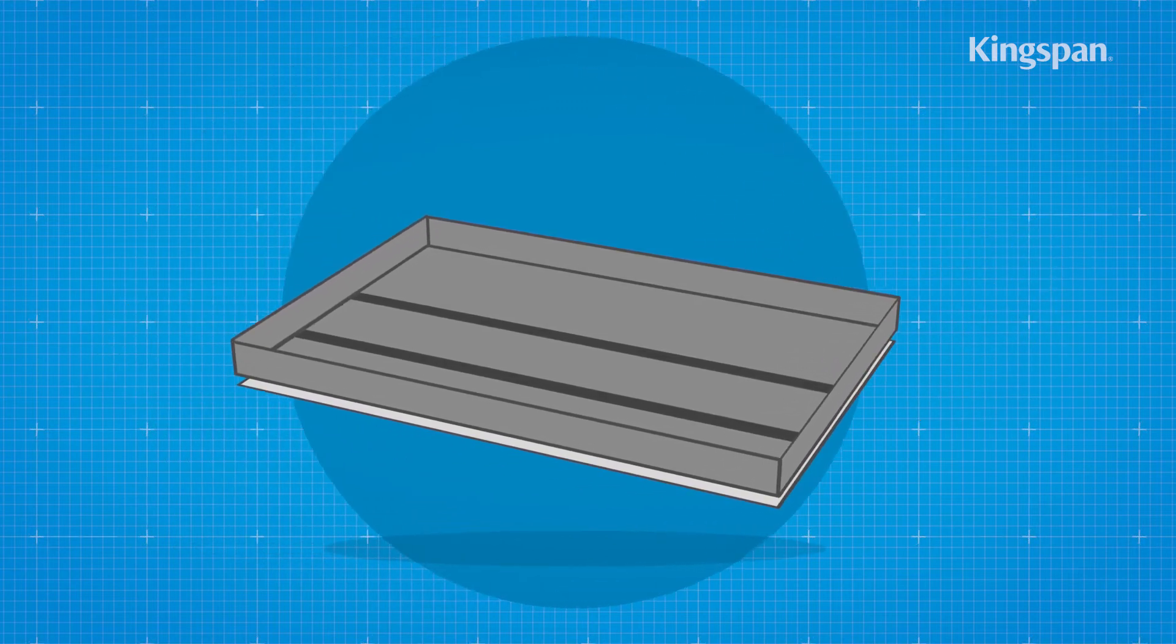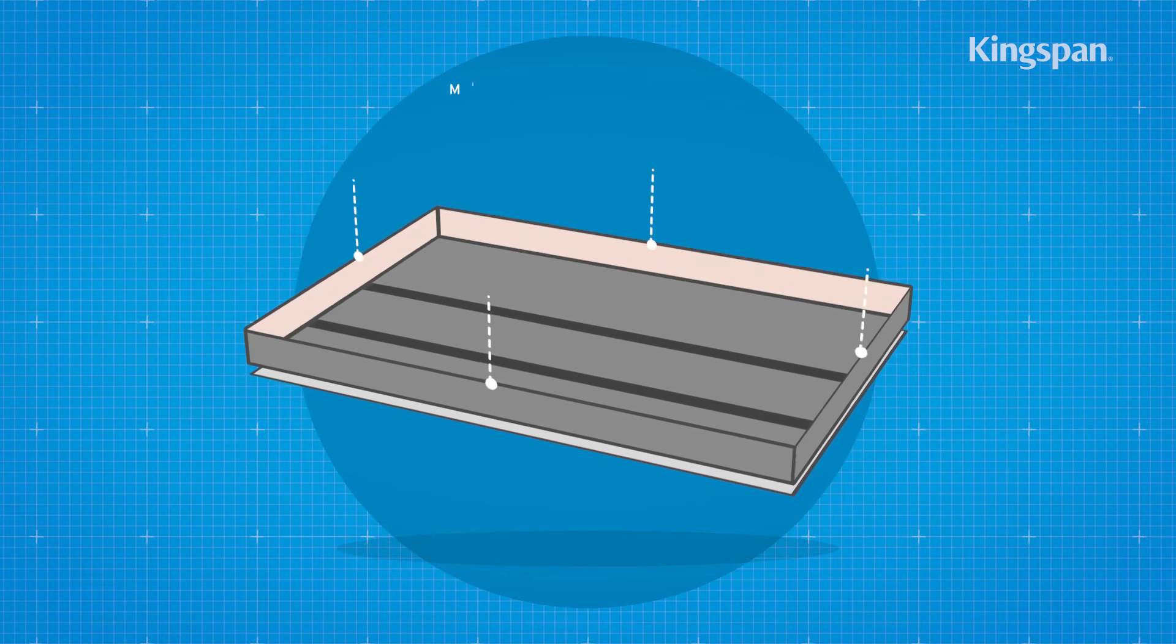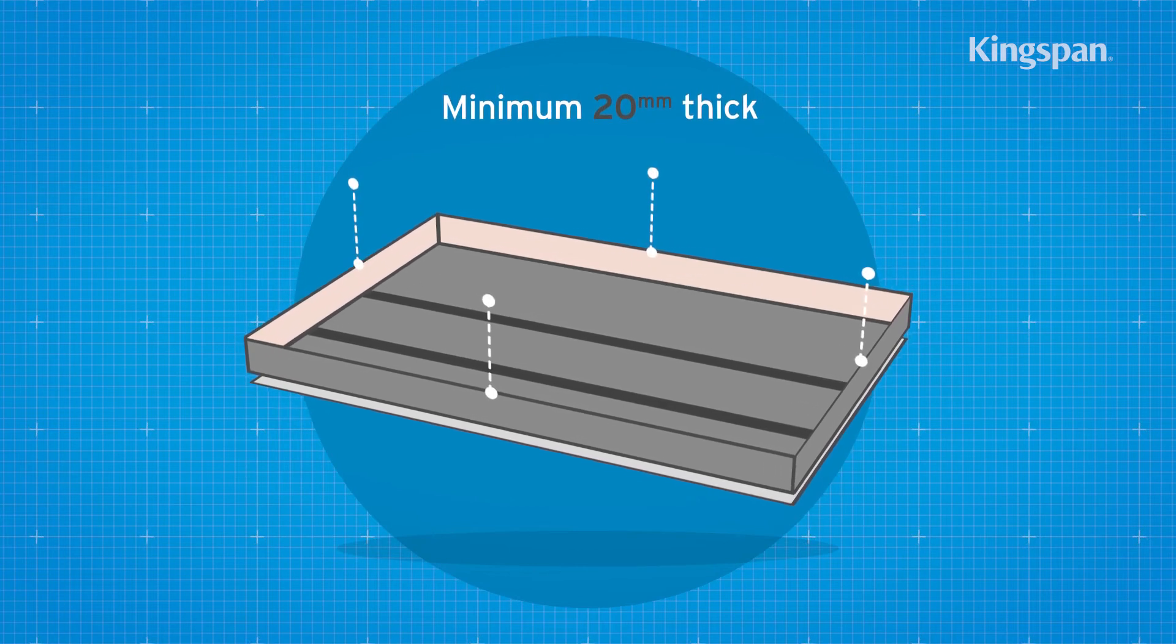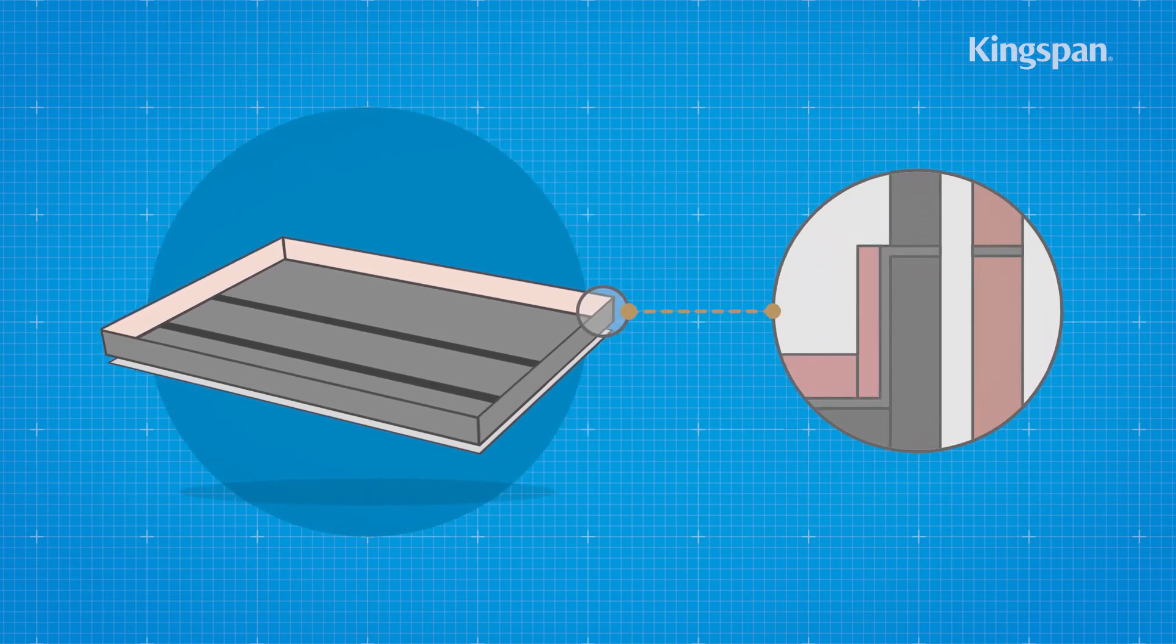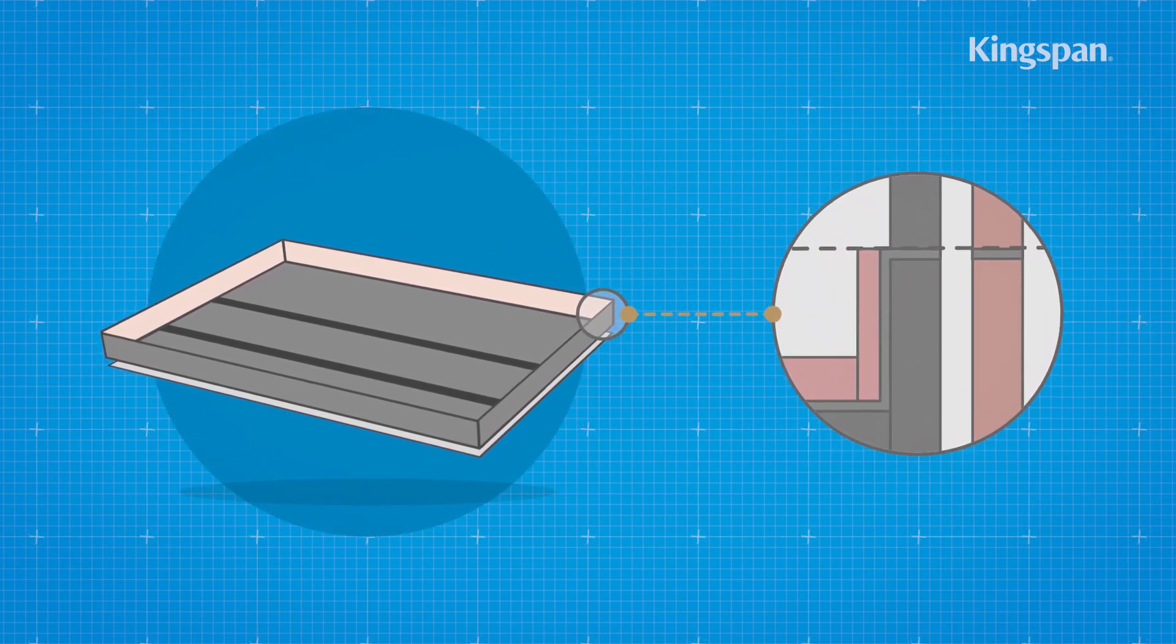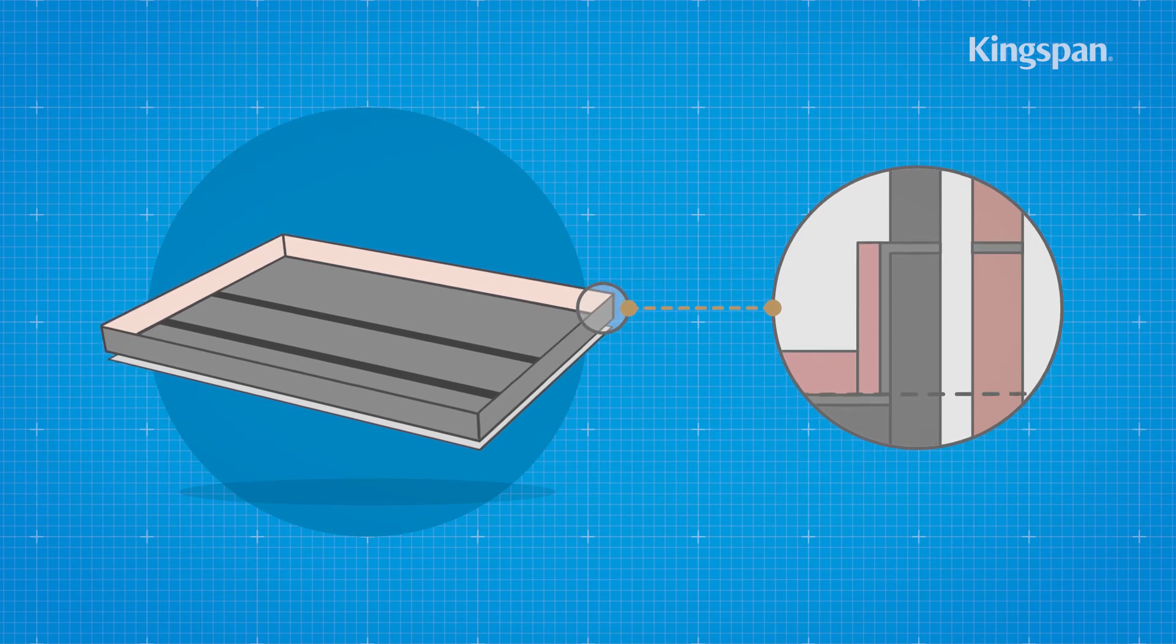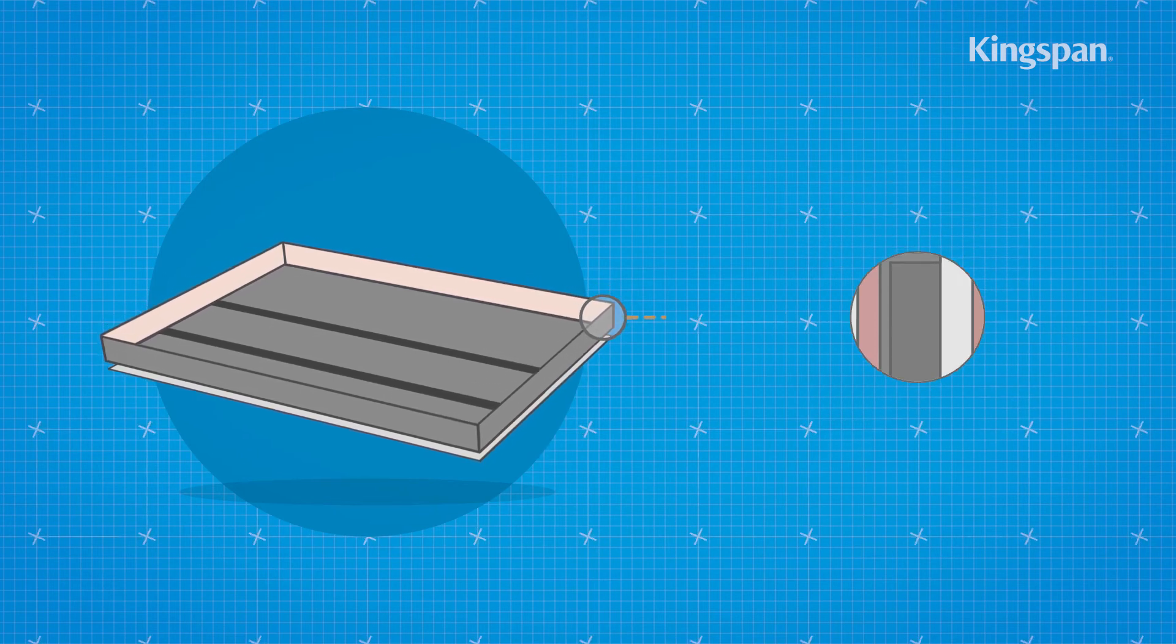A strip of appropriate insulation should be placed vertically around the perimeter of the room in order to prevent cold bridging. The top should be level with the top of the floor screed. The bottom should be level with the bottom of the horizontal floor insulation.